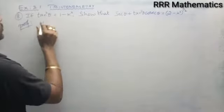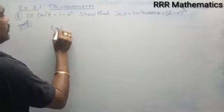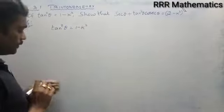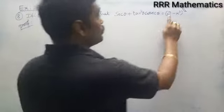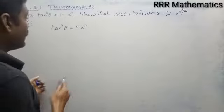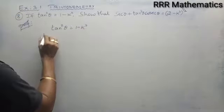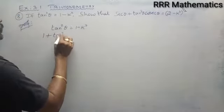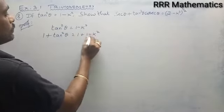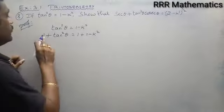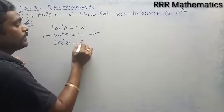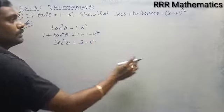I will take the given condition: tan squared theta equals 1 minus k squared. See, the right hand side has 2 minus k squared inside the bracket. Here I have 1 minus k squared, so when you add 1 on both sides, I am getting 1 plus 1 minus k squared. Here, 1 plus tan squared becomes secant squared, and on the right side, 2 minus k squared.